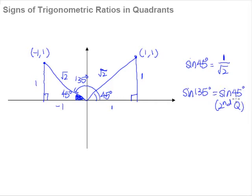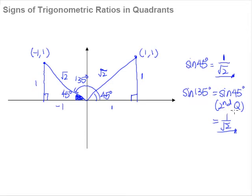So to find sine of 45 degrees in the second quadrant: this is the angle in question. The opposite side is again 1, over the hypotenuse side, which is again square root 2. So we start to realize that sine 45 degrees in the first quadrant and sine 135 degrees in the second quadrant give the same result.